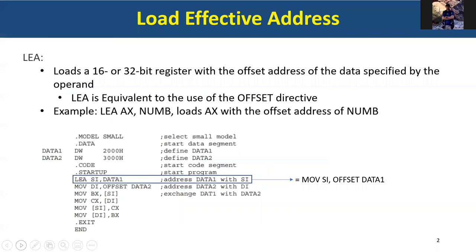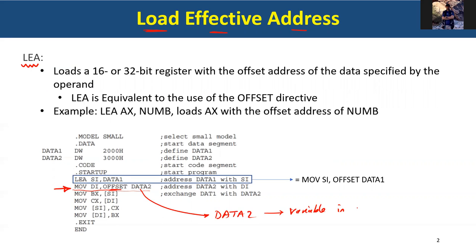Let's talk first about load effective address. LEA is an instruction that moves a particular address in the data segment into a register. Let's remember this instruction: MOV DI, OFFSET data2. We covered this before — data2 is a variable in the memory data segment, and it has some address. If we need to load this address into a register so we can use the data inside that memory location, we use the keyword OFFSET.